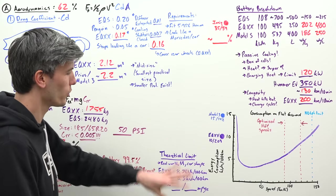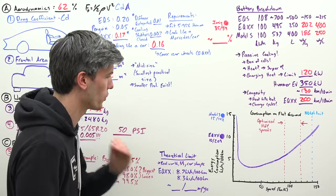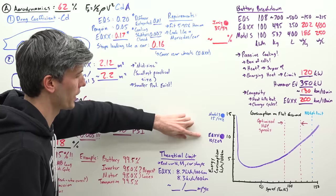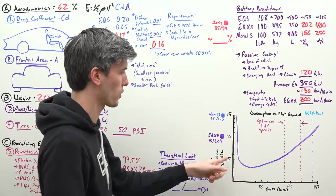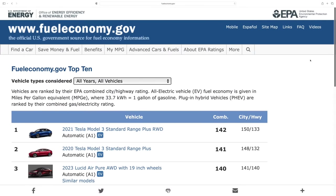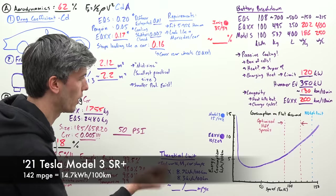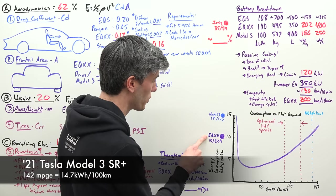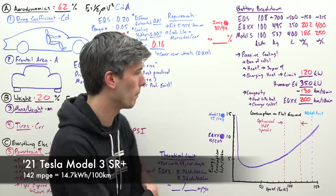Before we get into the juicy finale on theoretical limits, it's cool to look at existing technology in comparison to what Mercedes is seeking to achieve. They set out to achieve 10 kilowatt hours per 100 kilometers. According to the EPA, the best efficiency we've ever seen in a production car sold in the United States is the Tesla Model 3 Standard Range Plus which achieved about 15 kilowatt hours per 100 kilometers. We still have a significant jump between that and this Mercedes, or about 142 mile per gallon equivalent.